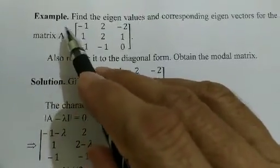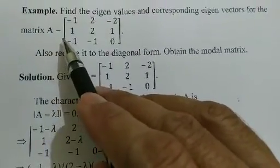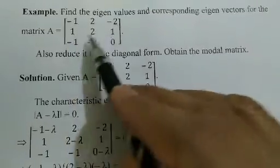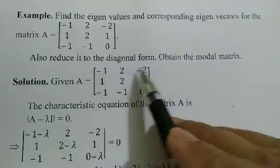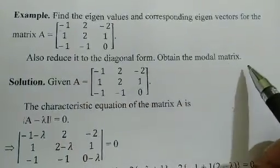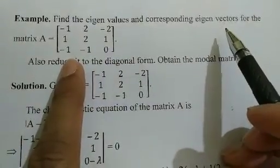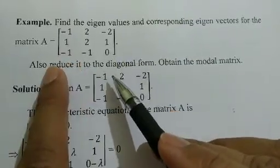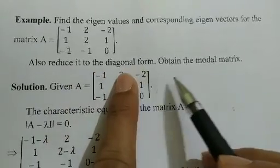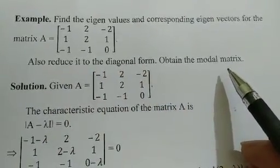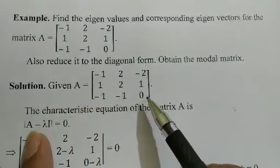Now we will do an example: Find the eigenvalues and corresponding eigenvectors for the matrix A = [[-1,2,-2],[1,2,1],[-1,-1,0]], and also reduce it to the diagonal form and obtain the modal matrix. The first task is to find eigenvalues and eigenvectors. After that, for the diagonal form we directly apply the result, and for the modal matrix we directly place the eigenvectors inside.